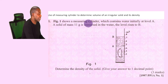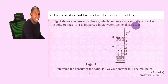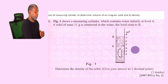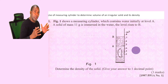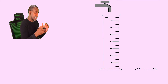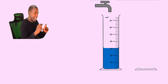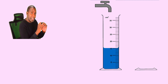Figure one shows a measuring cylinder which contains water initially at level A. A solid of mass 11 grams is immersed in the water and the level rises to level B. We first fill the measuring cylinder up to a certain level with water, then determine the volume of the water by reading the scale.